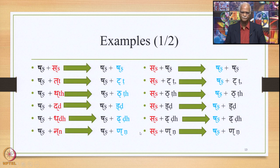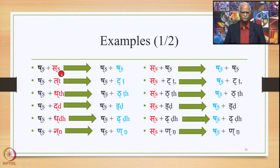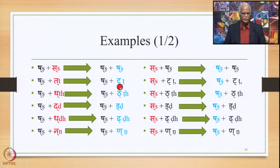Here are the template examples. For Purvanimittaka Ekasthanika Ekadesha: Shtu plus Shtu as input generates Shtu plus Shtu as output. Similarly Shtu plus Shtu gives Shtu plus Shtu. Remember the Nimitta and the Sthani have no Yathasankhya Nyaya. But between the Sthani and the Adesha, between the Karyi and the Karya, there is Yathasankhya. So Th gets substituted only by Th, Dh with Dh, and Na with Na.